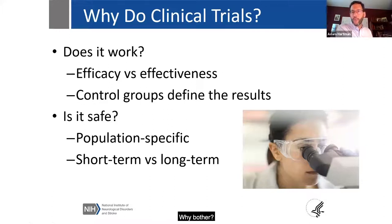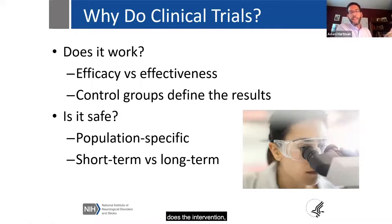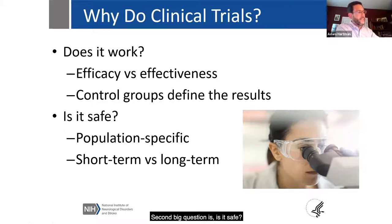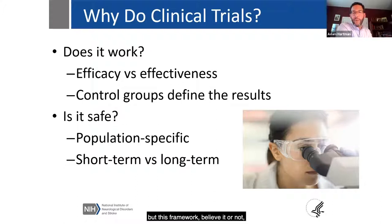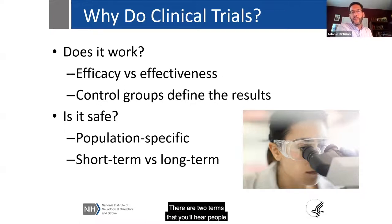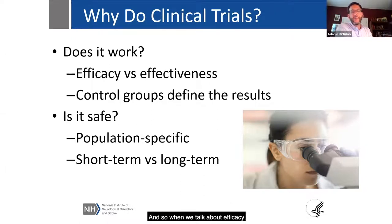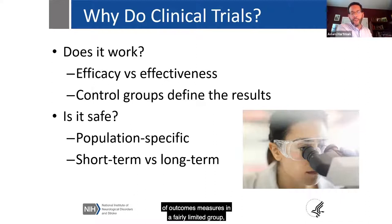Why do we do clinical trials? Why bother? They're expensive and complicated. We really need to know: number one, does the intervention — the treatment being proposed — actually work? Second, is it safe? When we talk about 'does it work,' there are two terms you'll hear: efficacy and effectiveness. Efficacy refers to a fairly limited number of outcome measures in a highly curated group of participants — historically, for example, men between the ages of 20 and 60 in a hypertension trial.